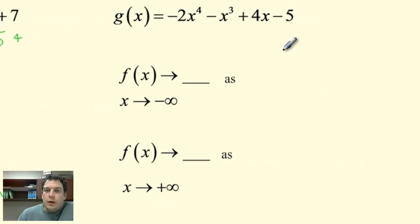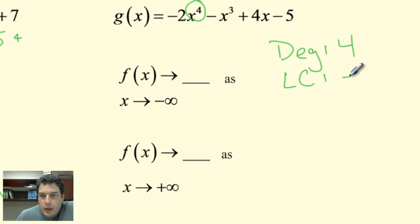Over here, when we look, the degree of this polynomial, g of x, is 4. It's the highest exponent right here. The leading coefficient is negative 2, and so that's negative. So we've got a negative leading coefficient, an even polynomial. And so now all I'm thinking is negative leading coefficient, even polynomial.